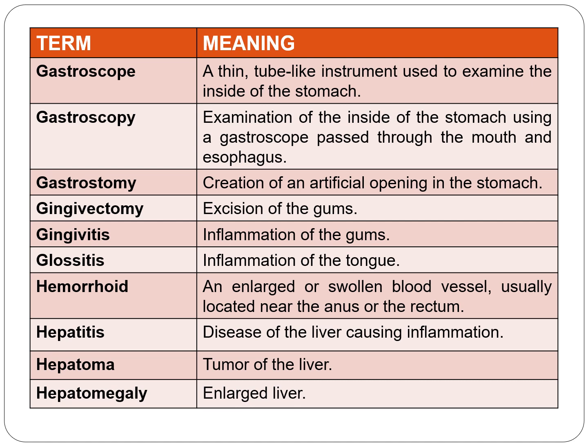Gingivitis is inflammation of the gums. 'Gloss' means tongue, so glossitis is inflammation of the tongue. A hemorrhoid is an enlarged or swollen blood vessel usually located near the anus or rectum. Hepatitis is disease of the liver causing inflammation. Hepatoma is a tumor of the liver. Hepatomegaly is an enlarged liver.